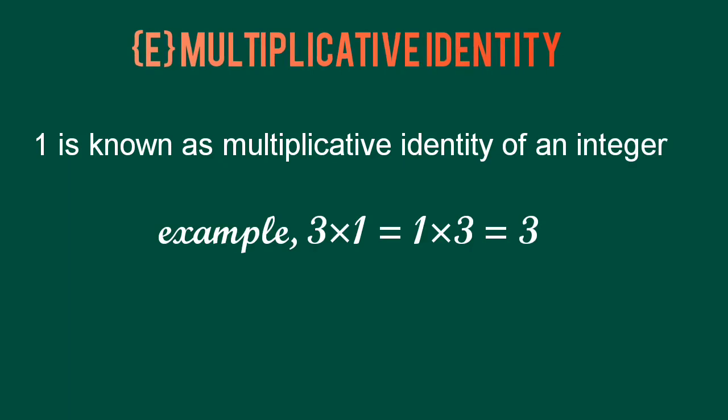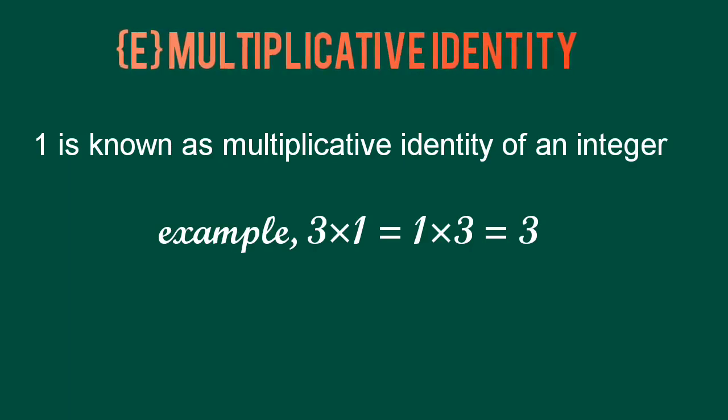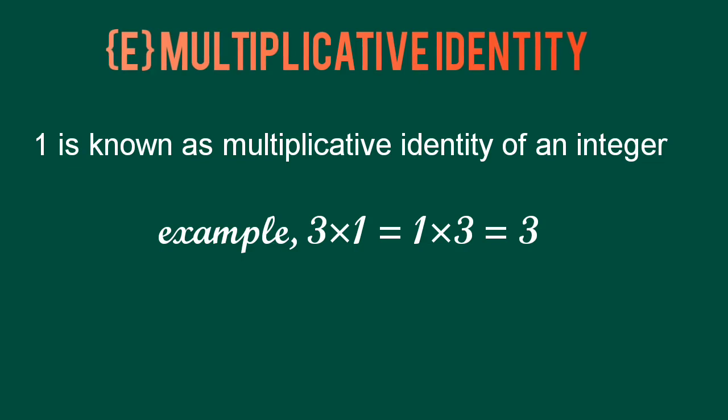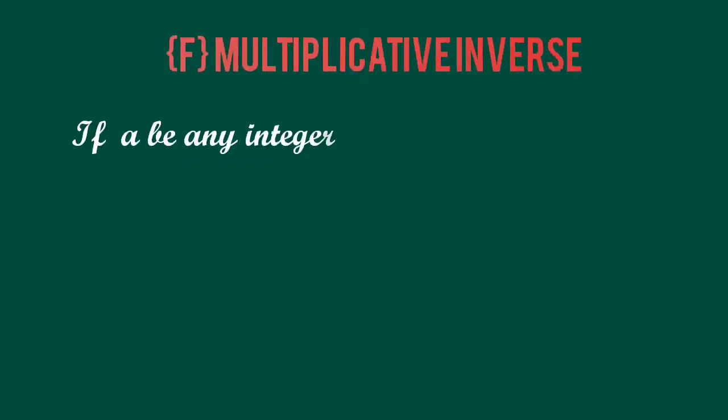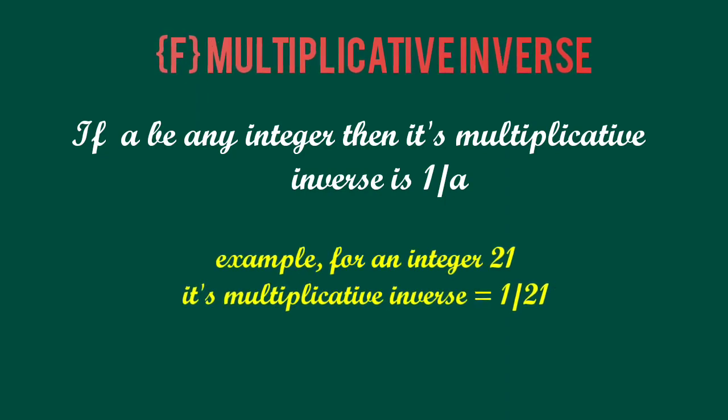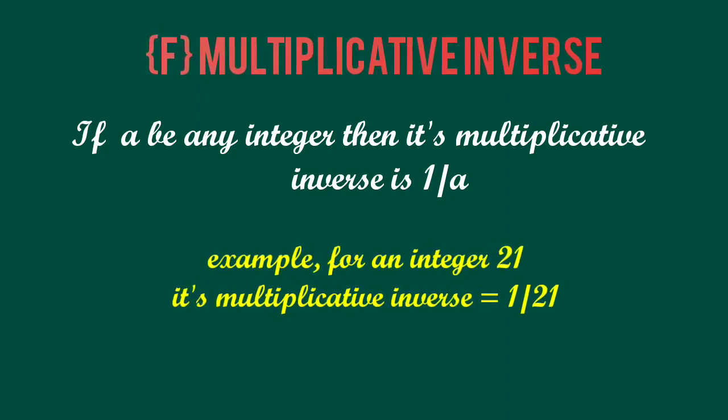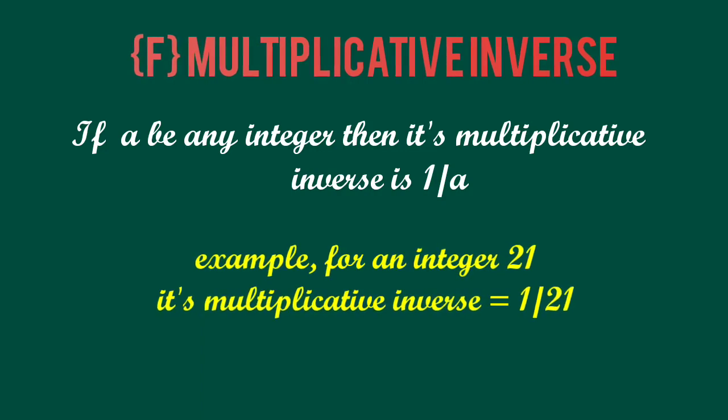Multiplicative identity: 1 is known as multiplicative identity of any integer. Multiplicative inverse: if a be any integer then its multiplicative inverse is 1 by a, that is its reciprocal.